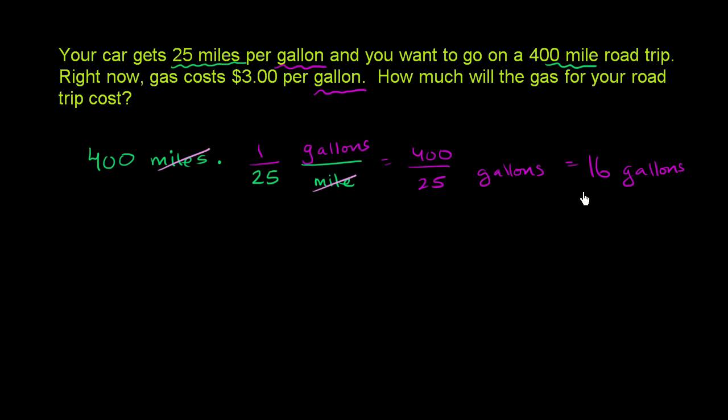So we haven't answered their question. They want to know, how much will my trip cost? Right now, we've just figured out how much fuel we're going to use. So then we could take our 16 gallons. And to figure out the dollar cost, are we going to multiply it by dollars per gallon or gallons per dollar? If we're thinking just about unit conversion, we want to multiply times the dollars per gallon. I could write it like dollars per gallon. Actually, let me just write out the word dollar. Dollars per gallon.